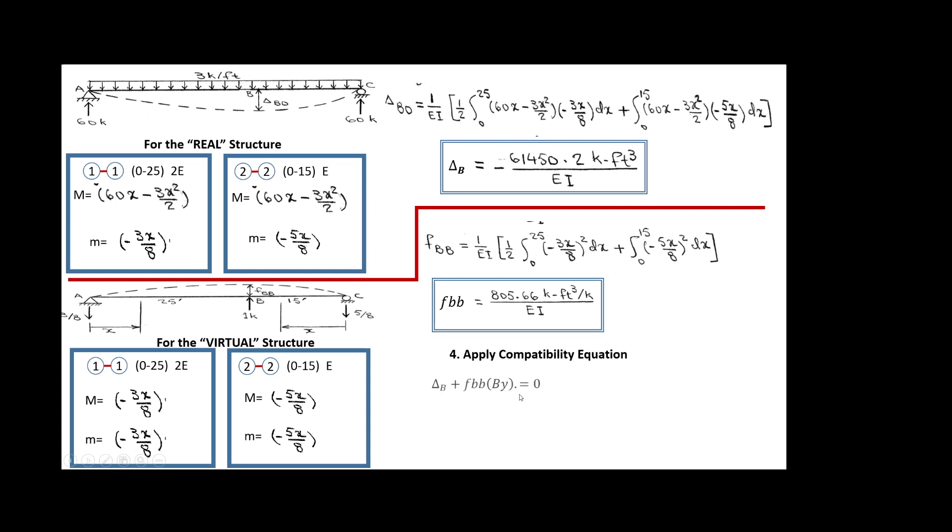Then the coefficient of flexibility will be this. And now you apply your compatibility equation. So delta b plus the coefficient of flexibility times the reaction here, that is the one that we are looking for, should be 0. And you can solve for By. And then you can get your value very easy for By.